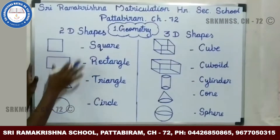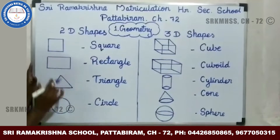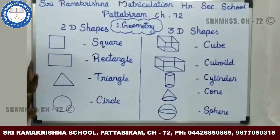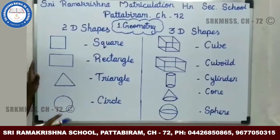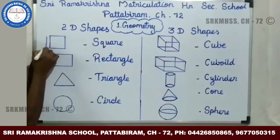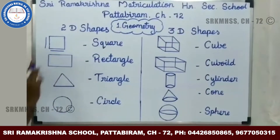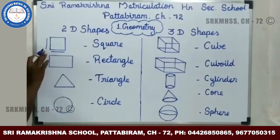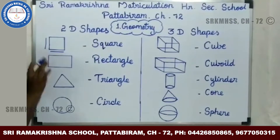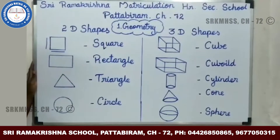First, we look at 2D shapes. 2D shapes have two measurements: length and width. Here are some examples of 2D shapes.